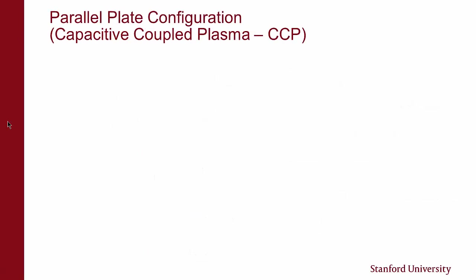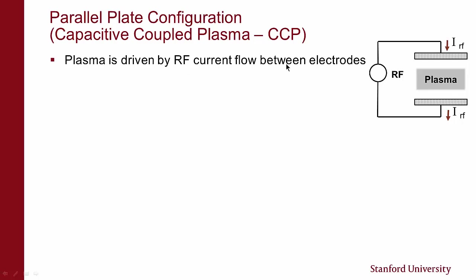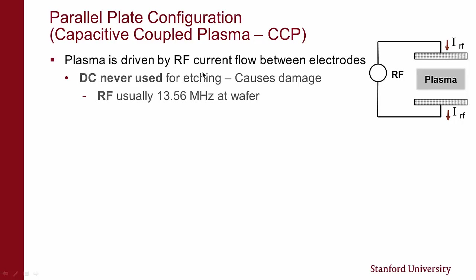So we have the CCP or capacitive coupled plasma. I'm showing the parallel plate case where our plasma sits between the electrodes with a sheath on both sides. The plasma is driven by RF currents going through the electrodes — RF current goes through the top electrode, across the sheath region, through the plasma, and out the other side. We never use DC supply for etching because of the damage issue. For RF, we use 13.56 megahertz, an industrial frequency set up by the FCC. There are special cases where lower frequency is used at the wafer, but typically 13.56 megahertz.